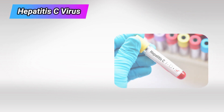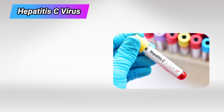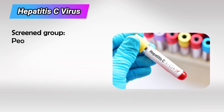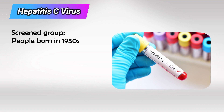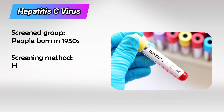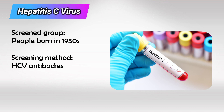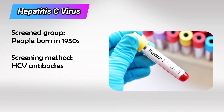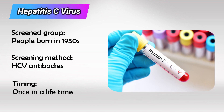Next we have hepatitis C virus, and we only screen people who were born in the 1950s. The screening method is anti-hepatitis C virus antibodies, and we only do it once in their lifetime.